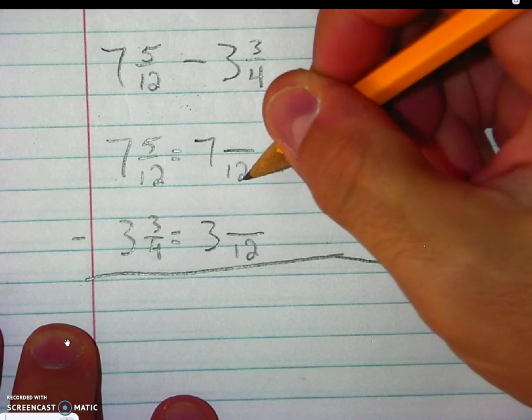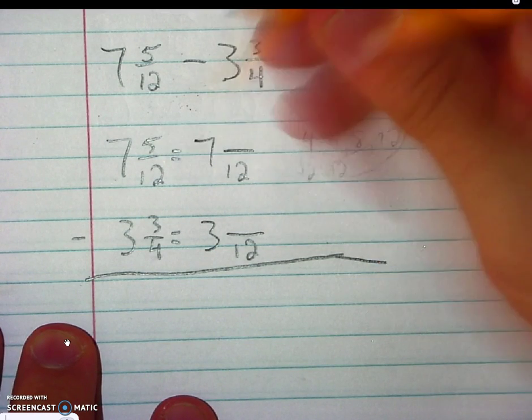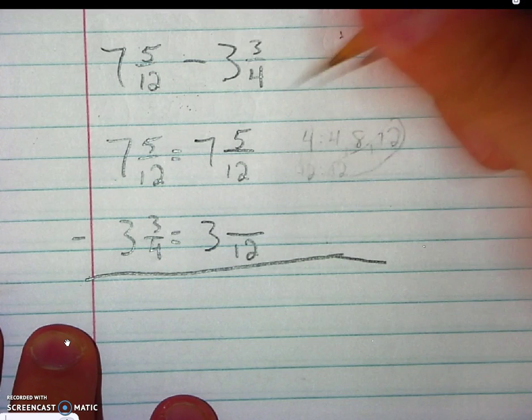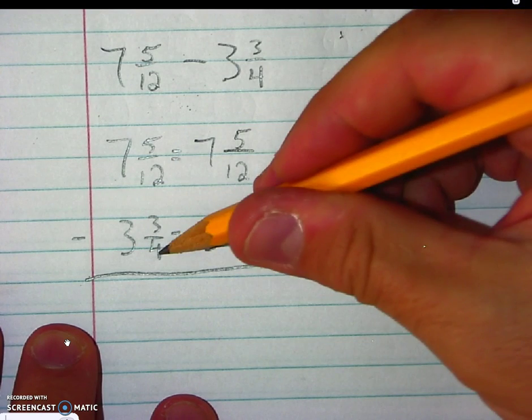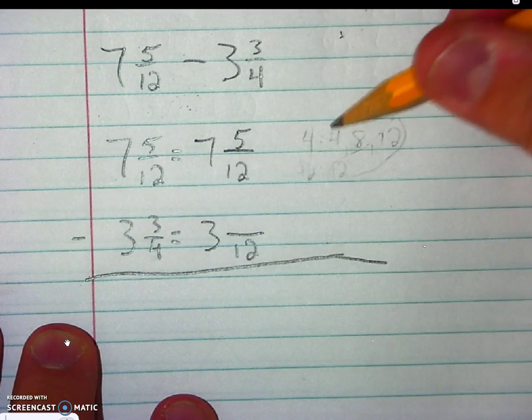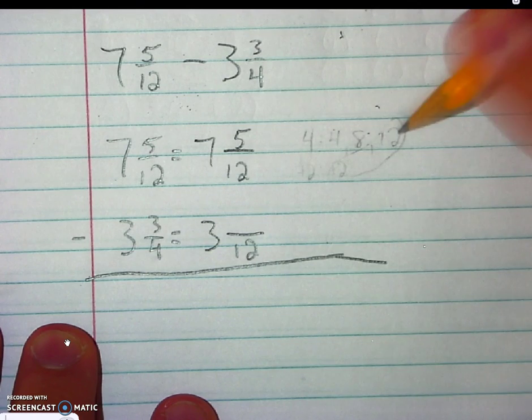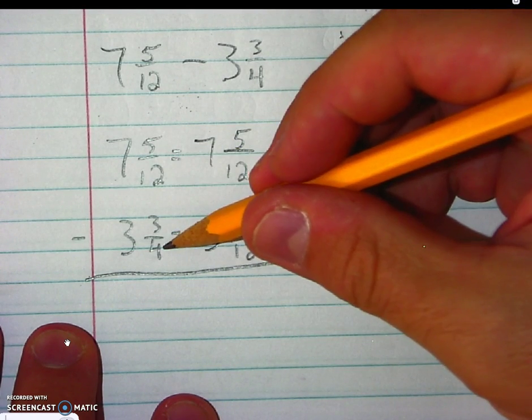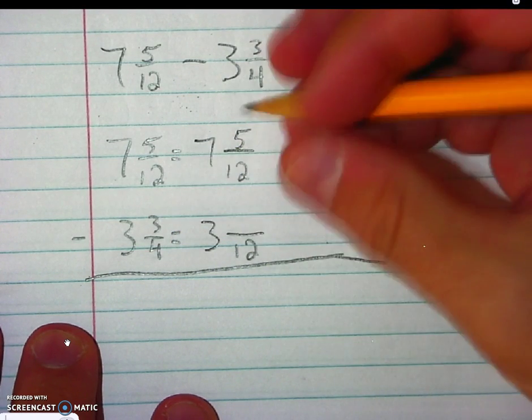Here, my denominator did not change. My numerator will also not change. Here, we multiplied our 4 times 3. So if we multiply our 4 times 3, we must also multiply our 3 times 3.